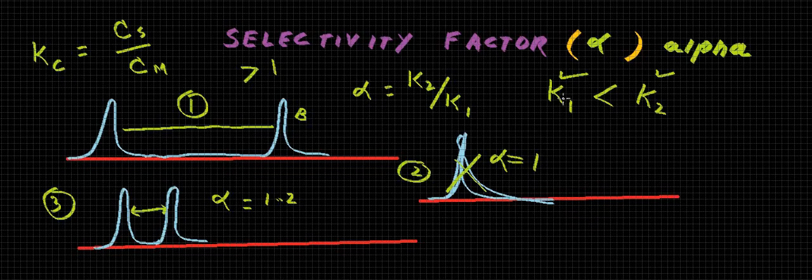Now what is alpha or selectivity factor? Alpha is actually K2 by K1, that is the ratio of the distribution coefficient of the components, and the value of alpha is either 1 or greater than 1. These are its values, its range. Minimum 1.